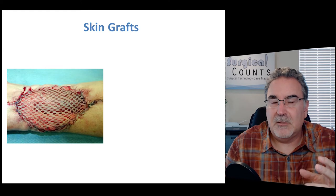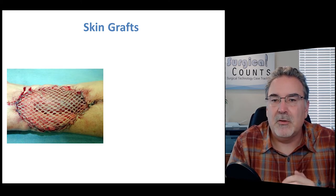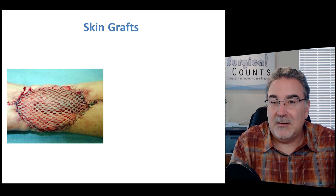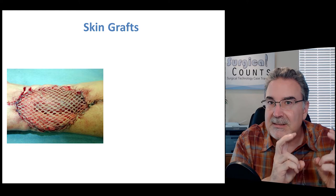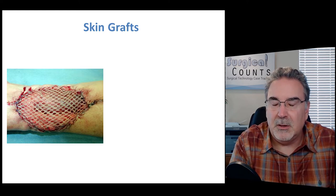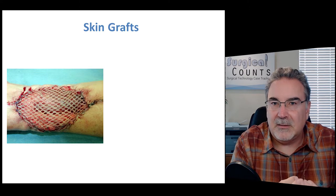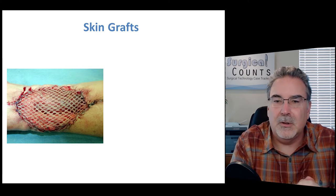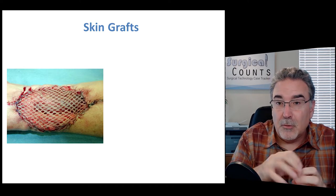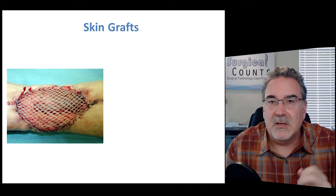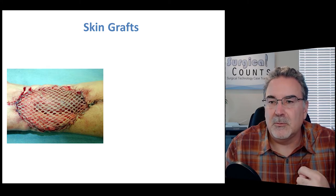Here you can see where a split thickness skin graft has been meshed and stretched out over the wound. In this case, we cover it with gauze and press those skin seeds onto the tissue below, allowing blood vessels to grow in and activate those skin cells to allow them to grow. When those seeds eventually heal, they'll cover the entire wound area, offering protection where the skin was removed.